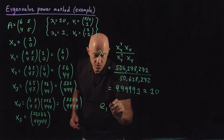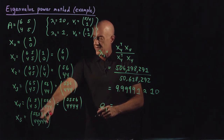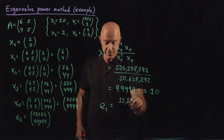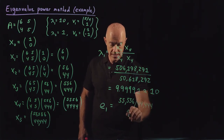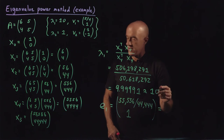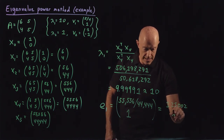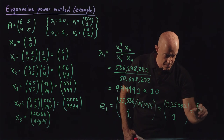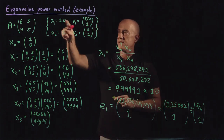The eigenvector E1 is just x5, but we can normalize. We divide through by the second component, so we write [55,556 / 44,444, 1], which turns out to be approximately [1.25002, 1]. That's our eigenvector associated with the dominant eigenvalue.